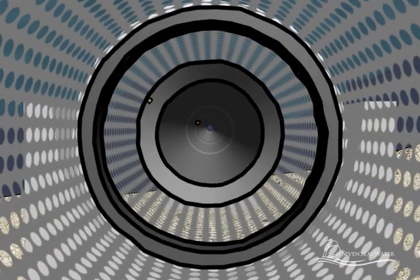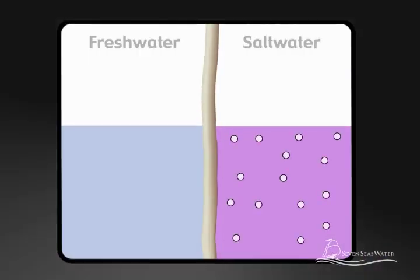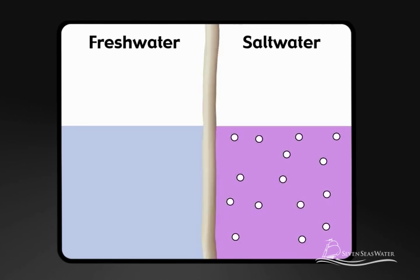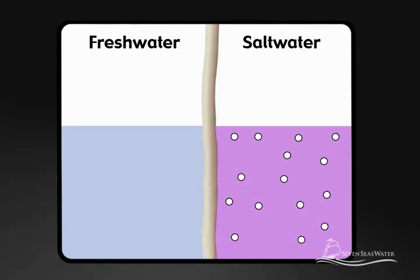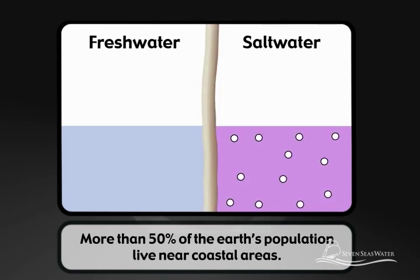Osmosis is a naturally occurring process where a solvent, such as water, passes through a semi-permeable barrier. The semi-permeable barrier, or membrane, allows some things to pass through it but not others.